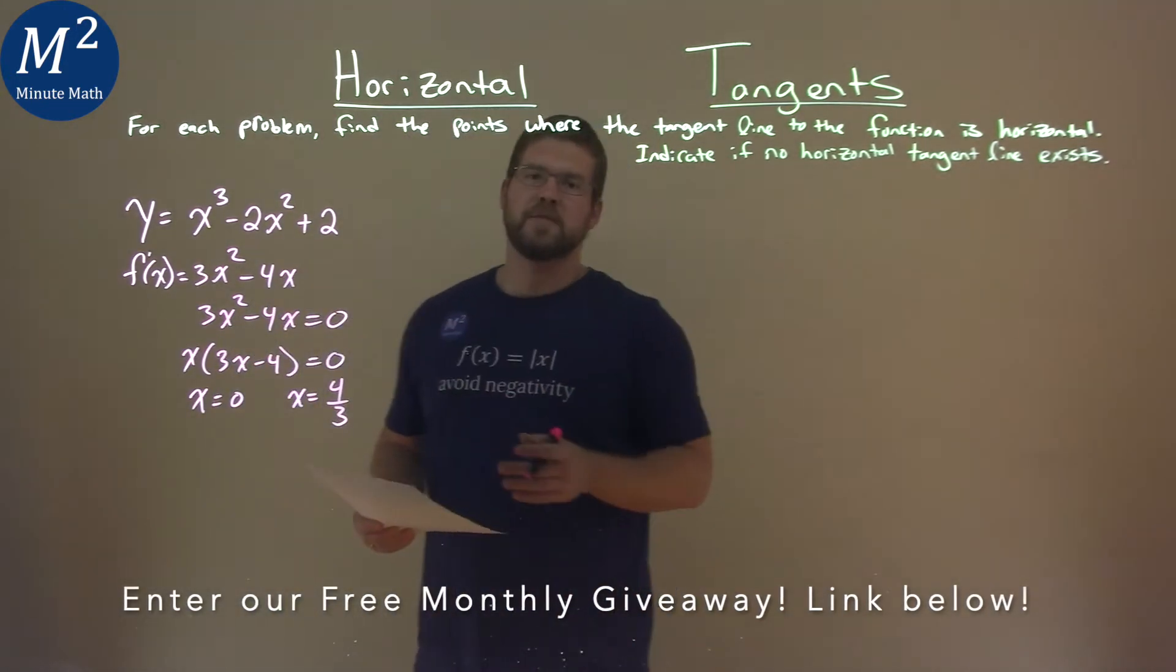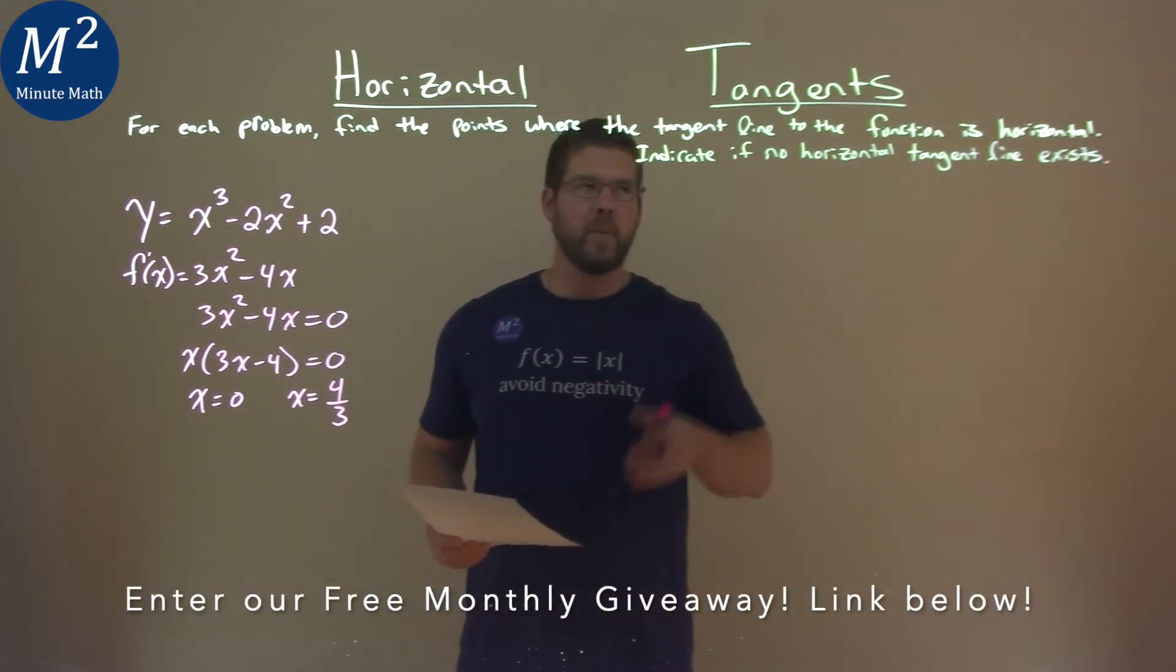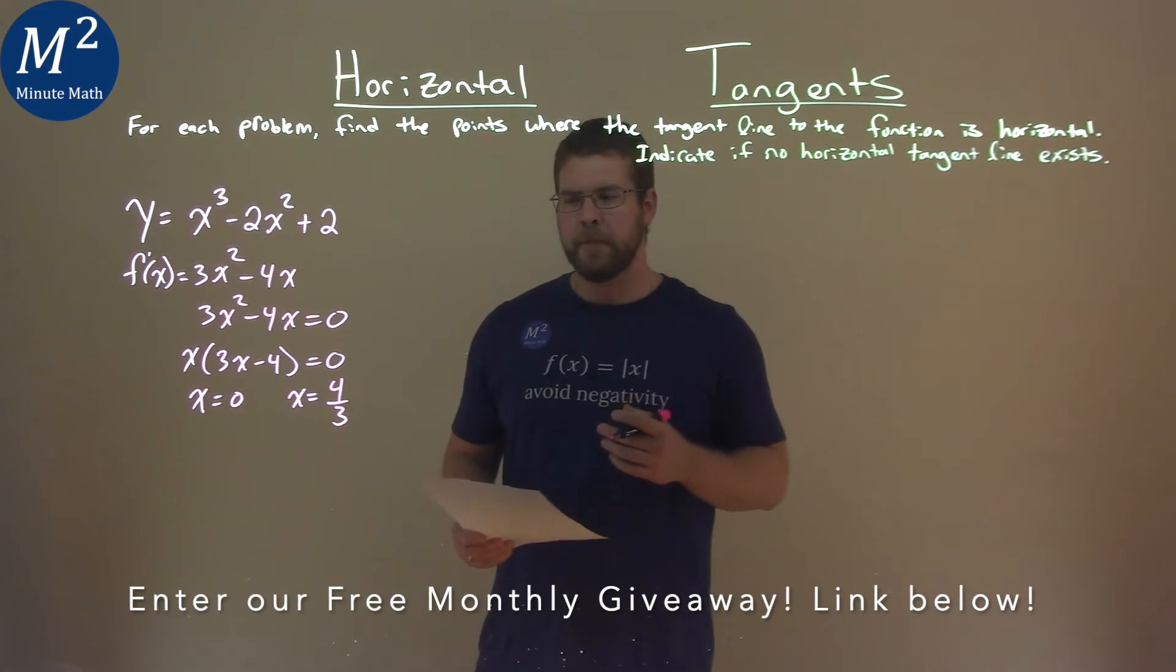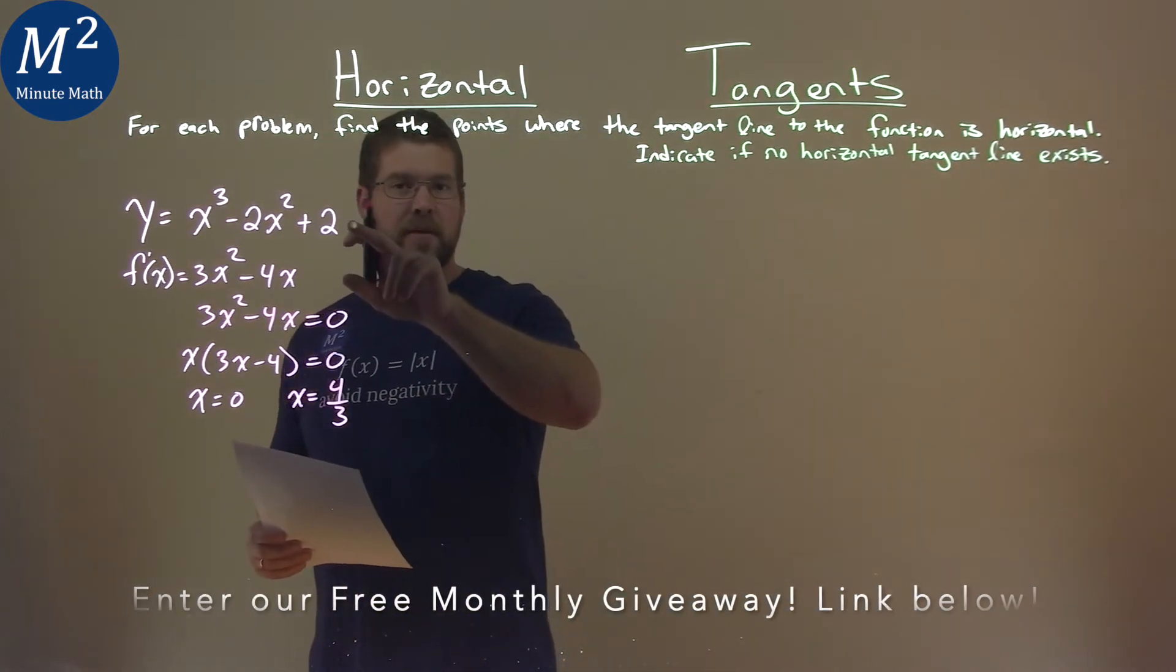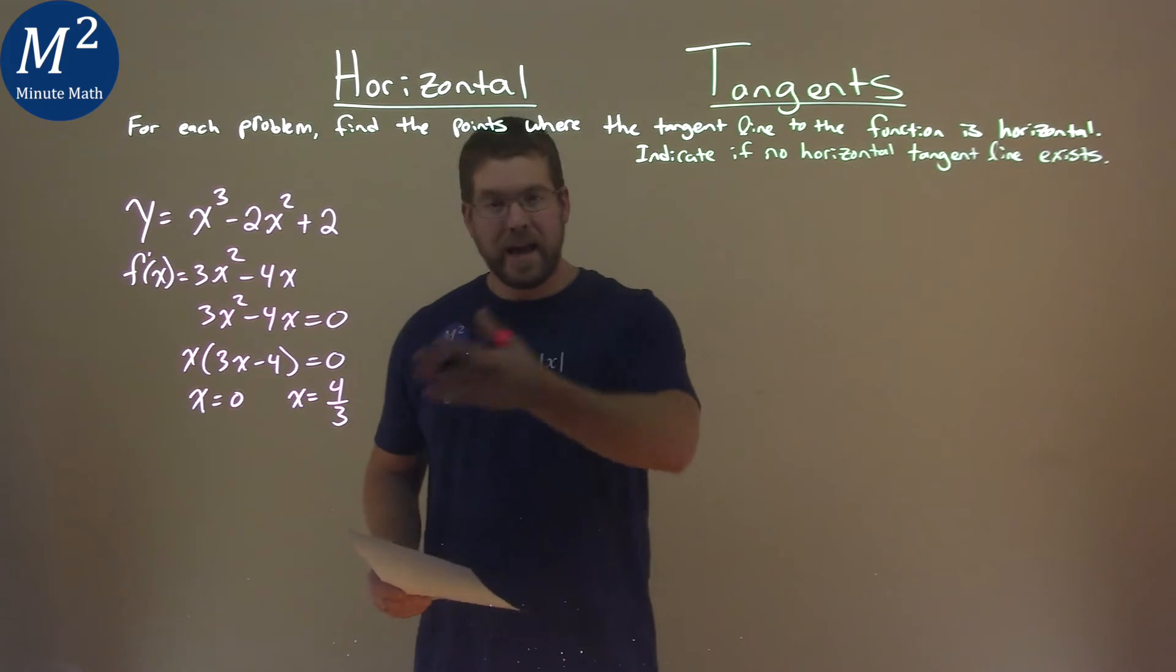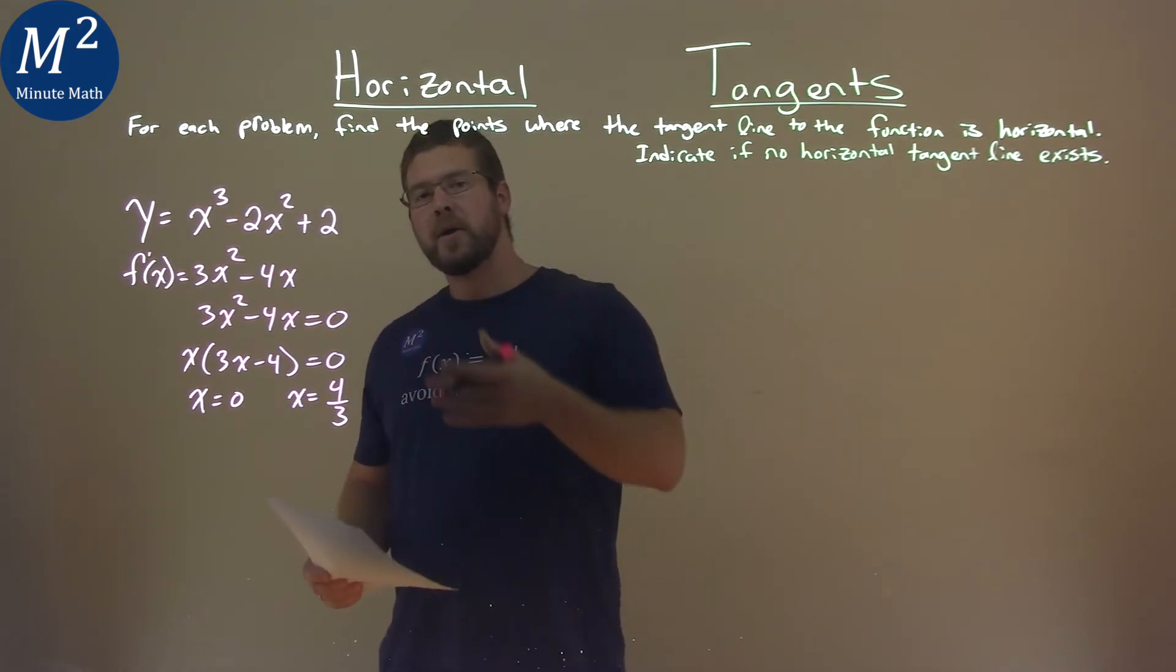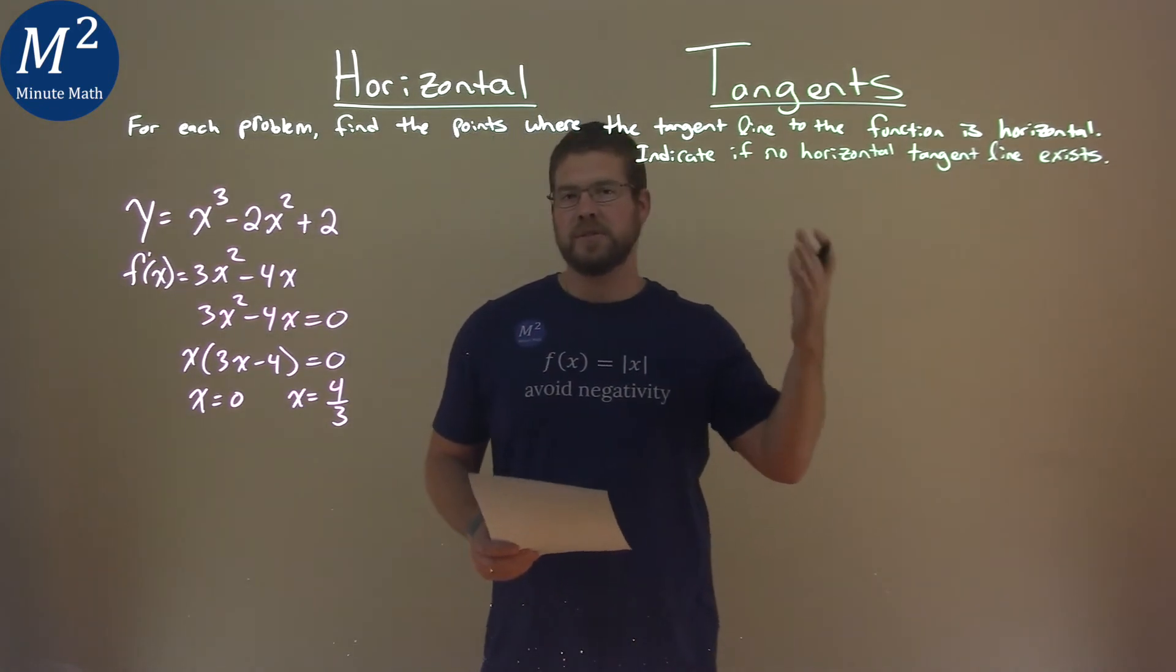So we have our two x values where this occurs, but we need to find the whole coordinate point here. So we use our original function right here, and we're going to plug in these x values to find the y coordinates where our tangent line of function is horizontal.